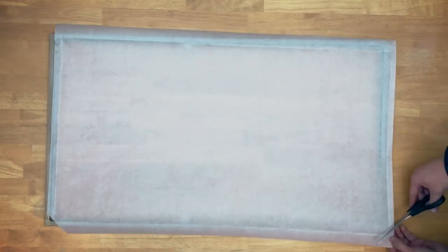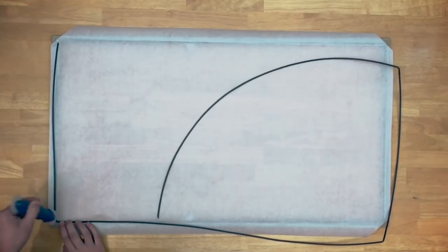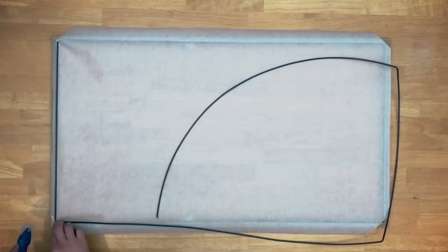To avoid wrinkles on the paper we need to make a small cutout on all four corners like so. Once this is done we take our spline material and insert it into the groove.